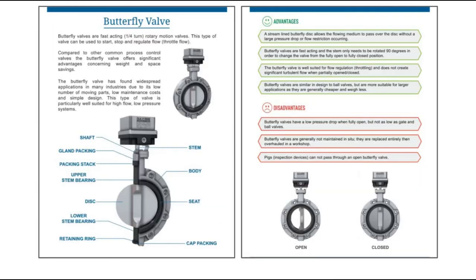Now here is a valve suitable for throttling applications — the butterfly valve. Butterfly valves are fast-acting rotary motion valves that can be used to start, stop, and throttle the flow. Compared to other common process control valves, the butterfly valve offers significant advantages in terms of weight and space savings. It has found widespread applications in many industries due to its low number of moving parts. The parts visible in the diagram include the stem, body, seat cap, packing, retaining ring, lower stem bearing, disc, upper stem bearing, packing stack, gland packing, and shaft.